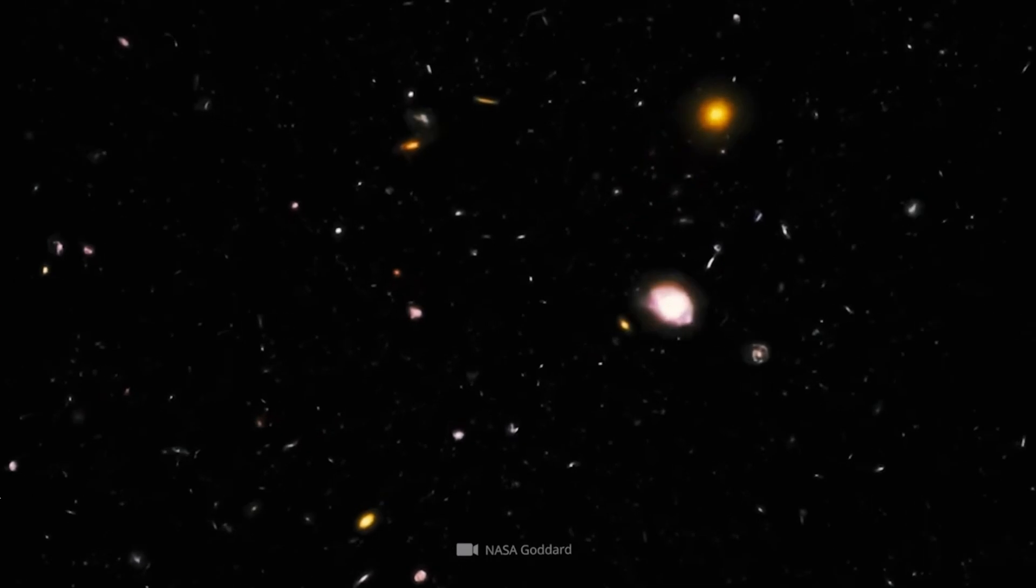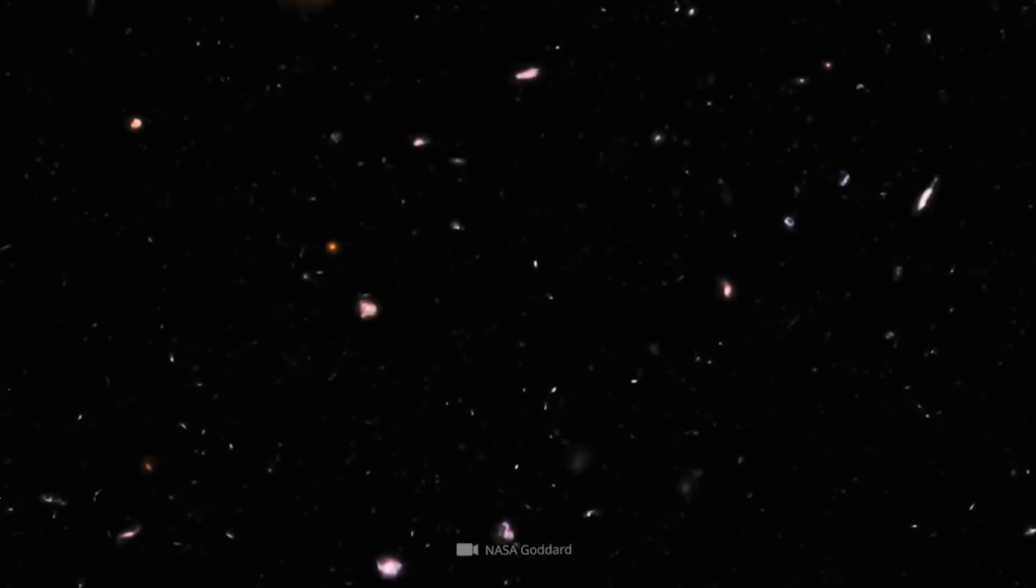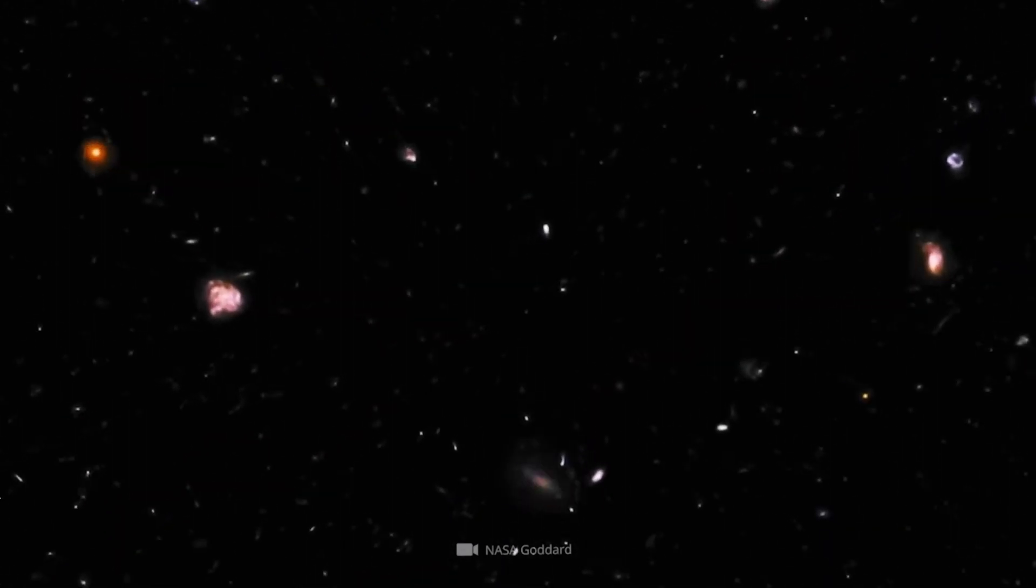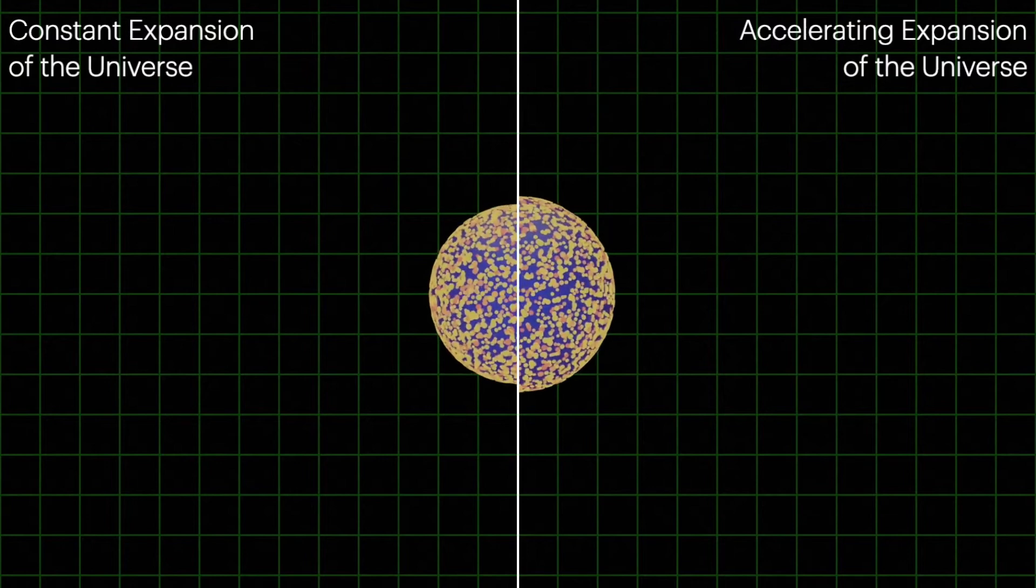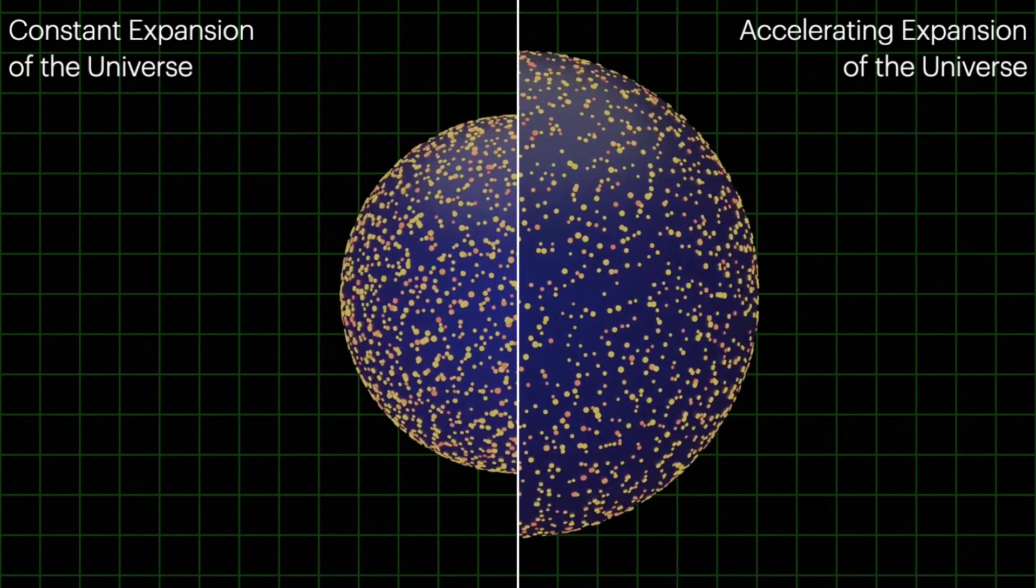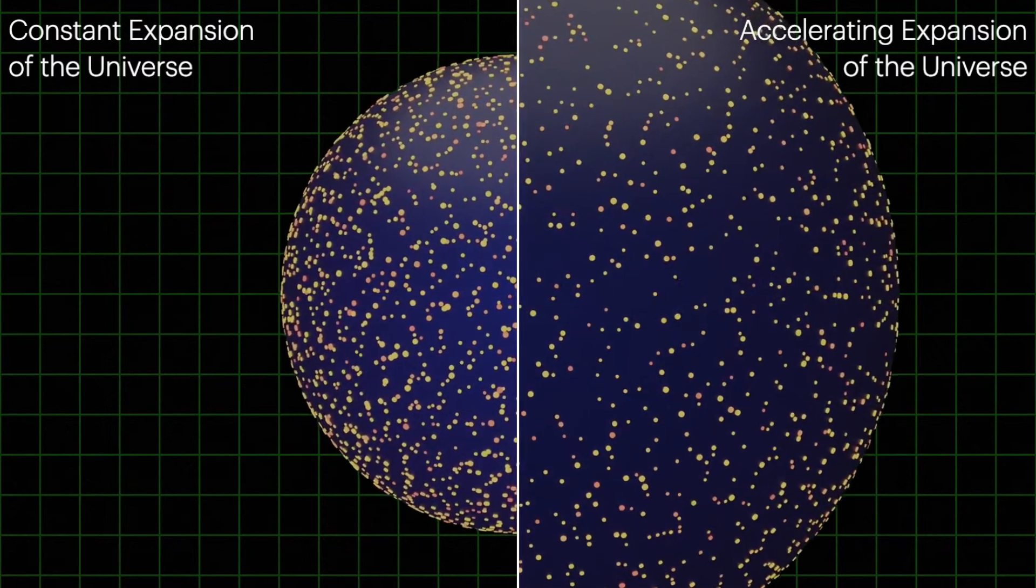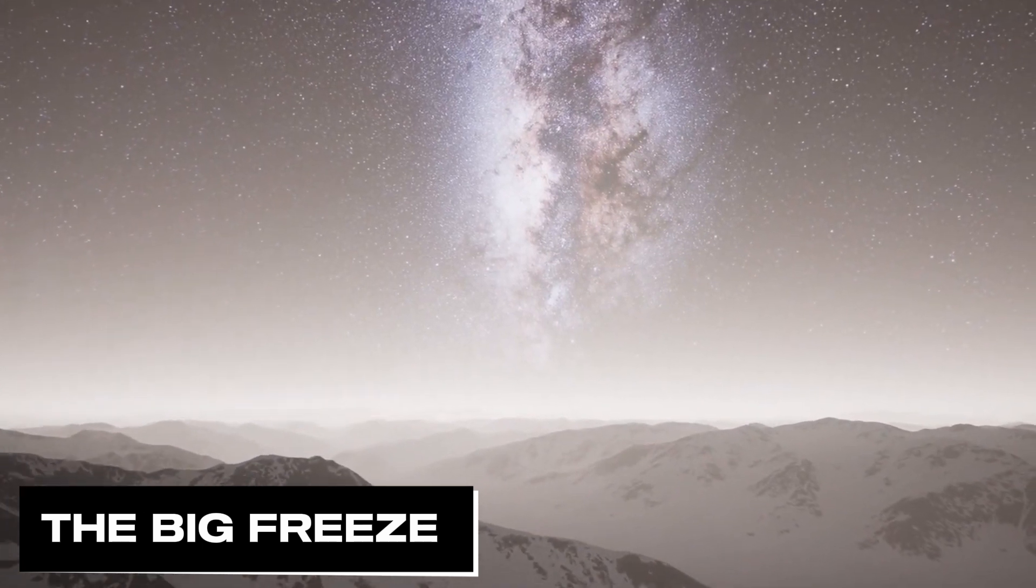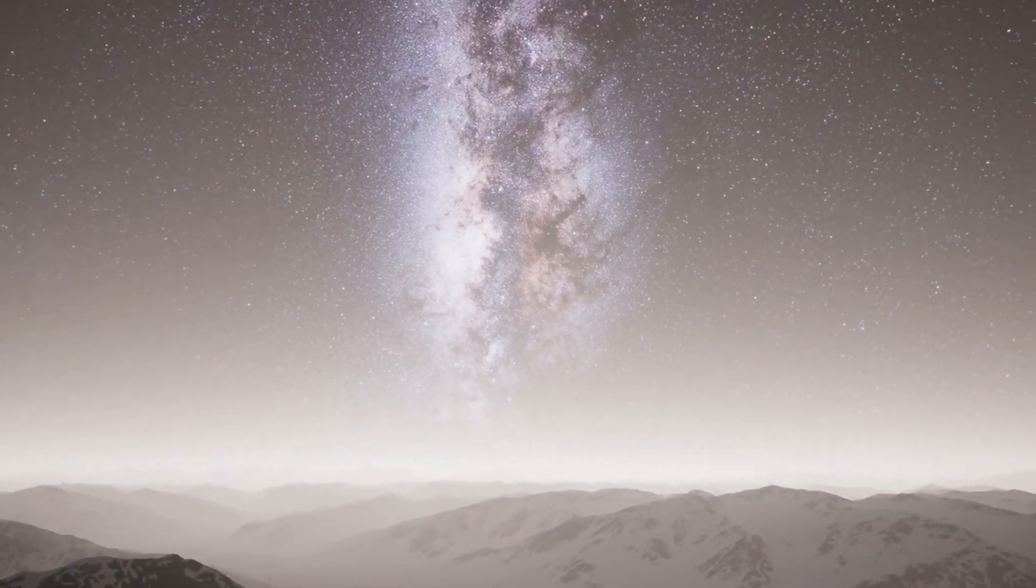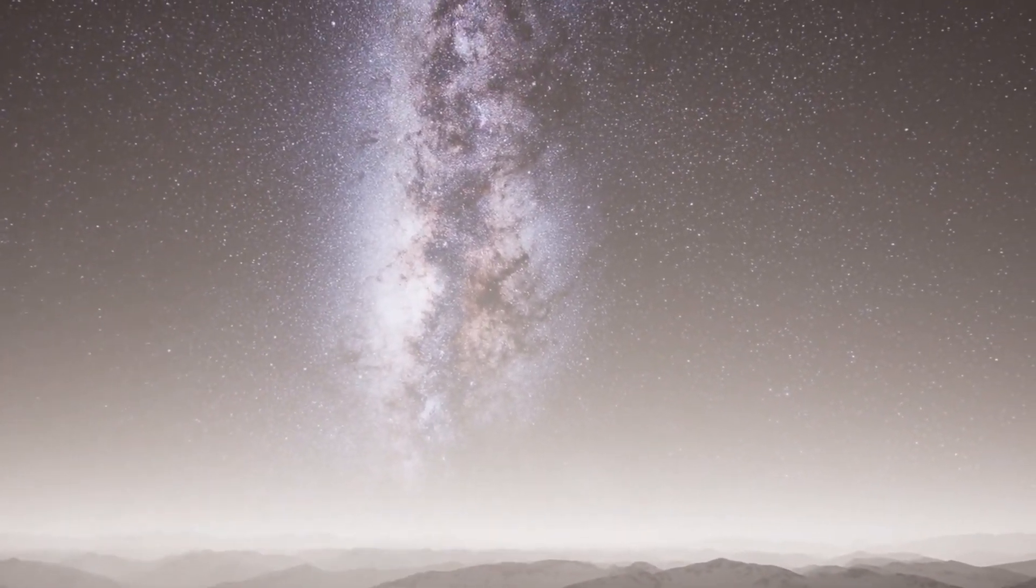In earlier models, the universe's expansion might have slowed down over time, potentially leading to a big crunch, where gravitational forces could cause the universe to collapse back into a singularity. However, with the discovery of accelerating expansion, the universe is now believed to be on a path toward continuous expansion, leading to scenarios such as the big freeze, where galaxies will eventually move so far apart that they will no longer be visible to one another.